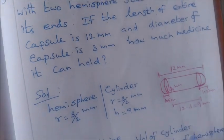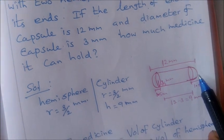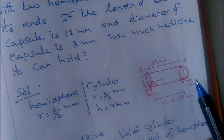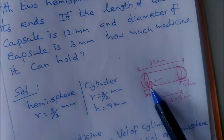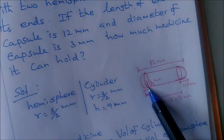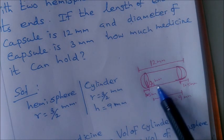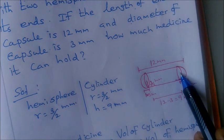So the capsule is in a shape of a cylinder with two hemispheres stuck. The diameter is 3 mm and the radius is 3 by 2 mm, that is 1.5 mm. So the radius is 1.5 mm.